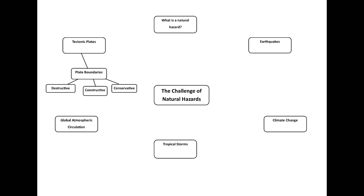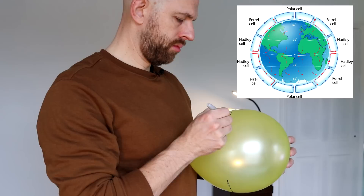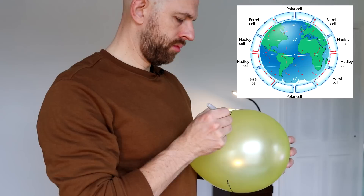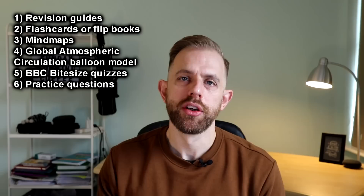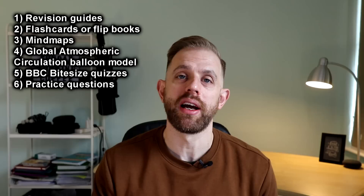You could also make a global atmospheric circulation balloon model — this is what I usually do with pupils in my classes, and it might be something you do at home. You just label all the different cells on that model. You could also look at BBC Bitesize, which is a fantastic website with little tests and quizzes you can easily do.